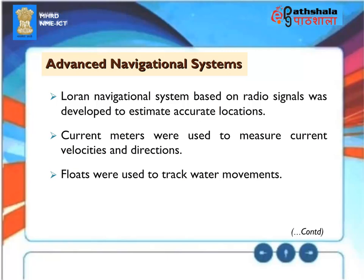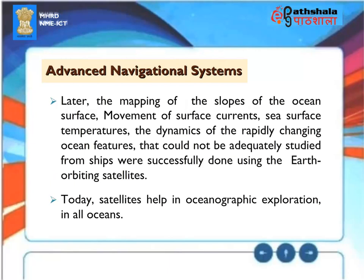Advanced Navigational Systems. The LORAN navigational system, based on radio signals, was developed to estimate accurate locations. Current meters were used to measure current velocities and directions, and floats were used to track water movements. Later, mapping of the ocean surface, surface currents, sea surface temperatures, and rapidly changing ocean features that could not be studied adequately from ships were successfully accomplished using Earth-orbiting satellites. Today, satellites help in oceanographic exploration in all oceans.